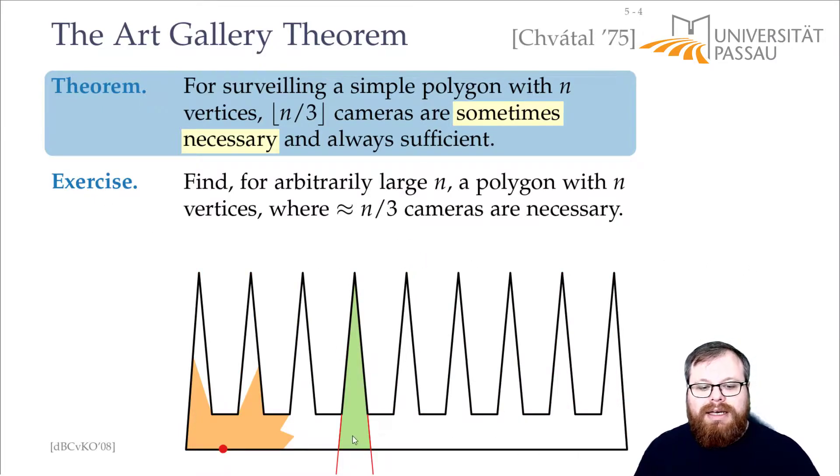And these triangles do not overlap. So for each of these spikes, I need one camera. And with one camera per spike, I can easily do it. Just place it down here, opposite of the spike, and we're done.